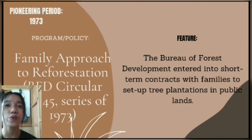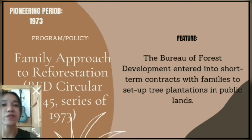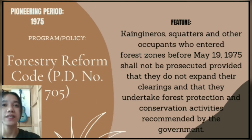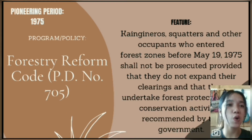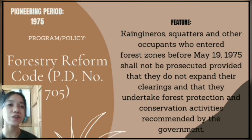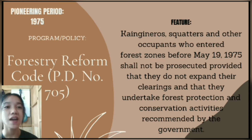The pioneering period also includes 1973's Family Approach to Reforestation, BFD Circular Number 45, Series of 1973, where the Bureau of Forest Development entered into short-term contracts with families to set up tree plantations on public lands. In 1975, the Forestry Reform Code, PD Number 705, stated that kaingineros, squatters, and other occupants who entered forest zones before May 19, 1975 shall not be prosecuted, provided they do not expand their clearings and undertake forest protection and conservation activities as recommended by the government.